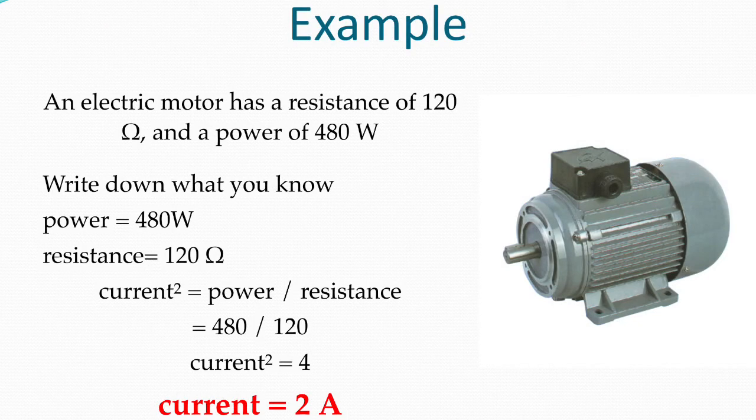As an example, we have an electric motor with a resistance of 120 ohms and a power of 480 watts. If we substitute these into the equation that we know, and then we rearrange, we can find that current squared equals 480 divided by 120, which is 4. And if we square root both sides, the current then equals 2 amps.